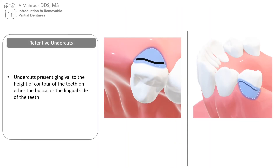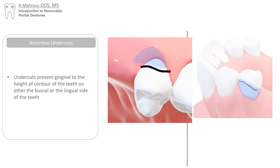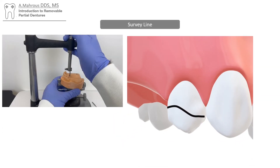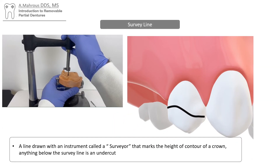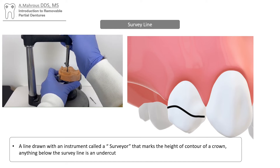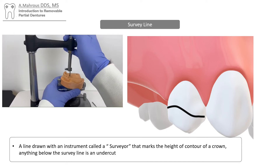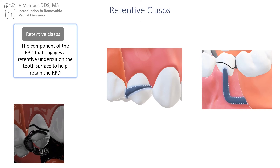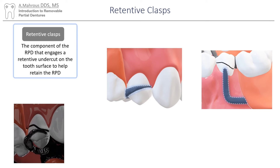Retentive undercuts exist gingival to the height of contour. The height of contour is marked with a survey line, which marks the height of contour of a tooth. This is done during surveying, which we will cover in another video. Retentive clasps engage those undercuts in order to retain the partial denture.